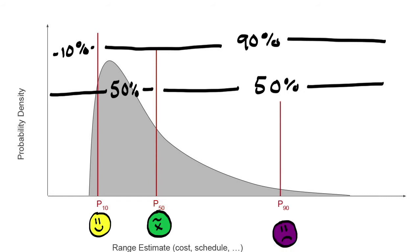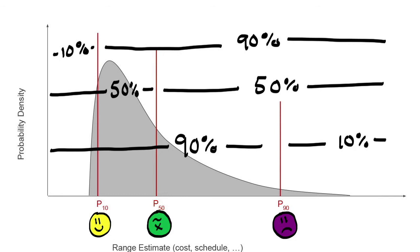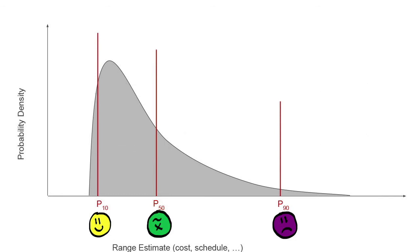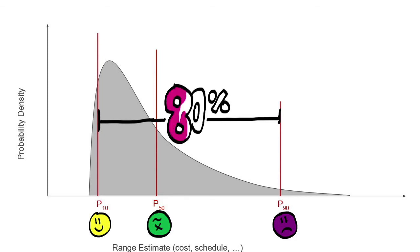And the pessimistic case is the P90, 90% chance of lower, 10% chance of higher. Using this definition, there is an 80% chance that the final cost would fall between the P10 and the P90 points.